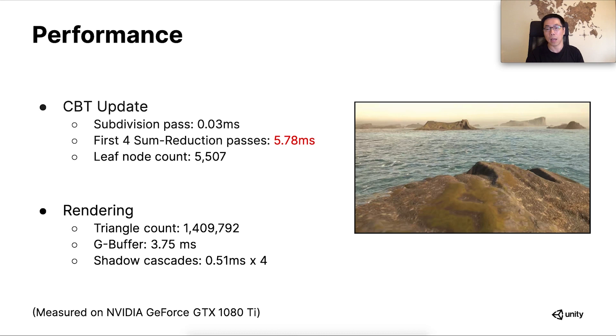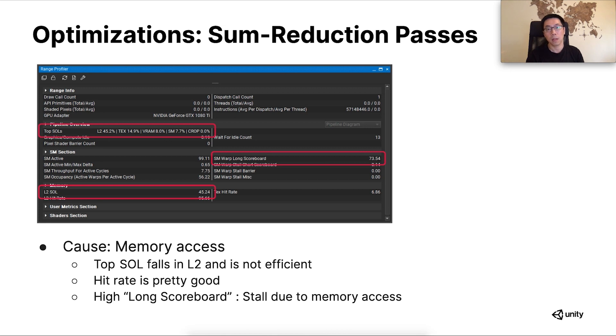For now, we'll take a deep look at what's causing the slowness in the sum reduction passes. Let's look at this profiling result for the first sum reduction pass, the most expensive one. We quickly notice that the top speed of light is L2 memory, followed by the texture unit, and the efficiency hadn't even reached 50%. Specifically, the site shows the warp stalls mostly waiting for long scoreboard. From NVIDIA's website, we know it means the GPU is waiting for buffer access operations to finish. Improving the way we read and write the CBT buffer in the sum reduction passes became our main goal for the optimization.